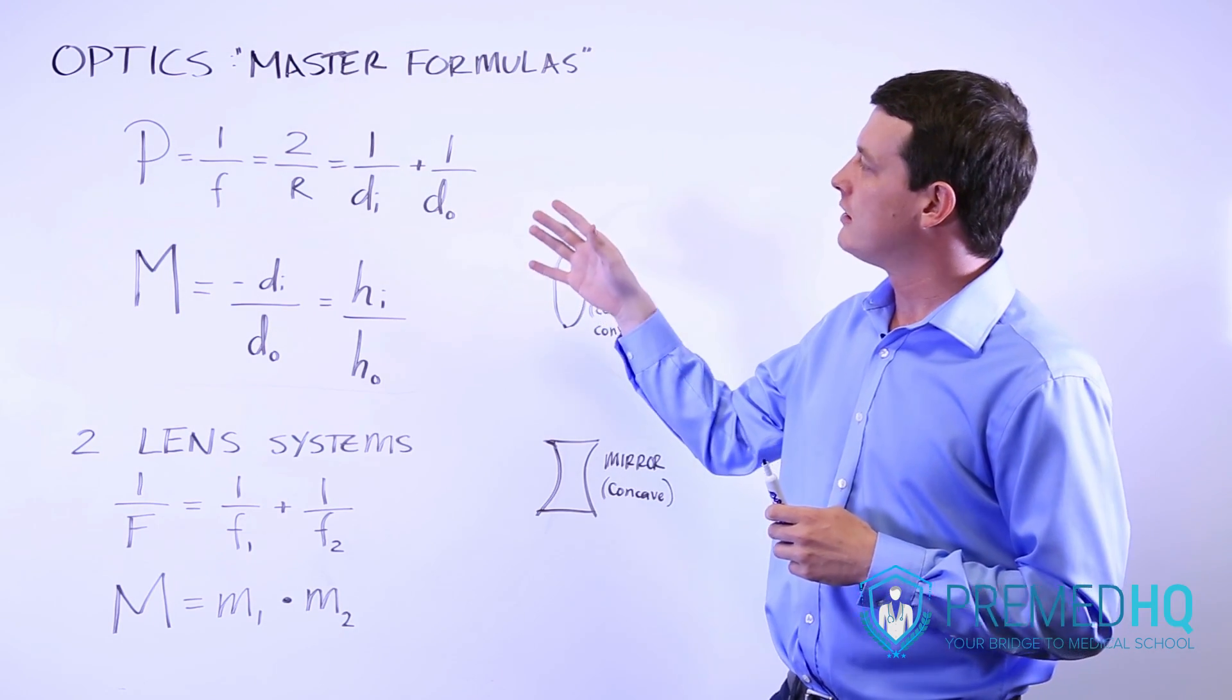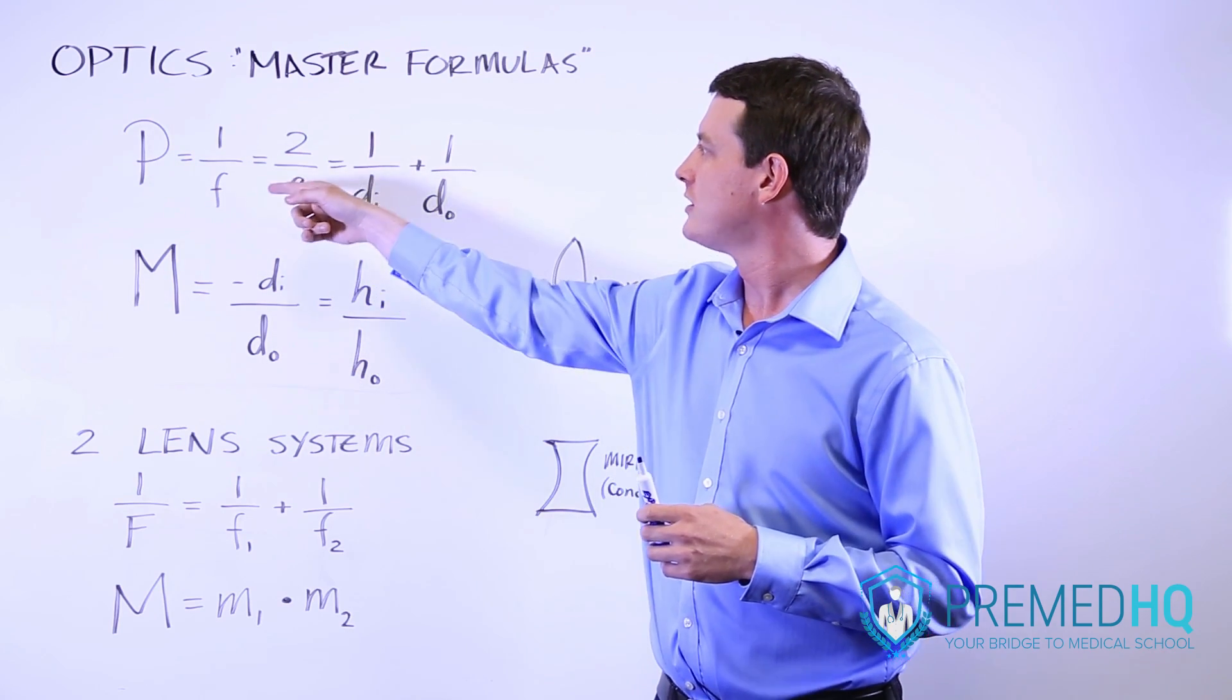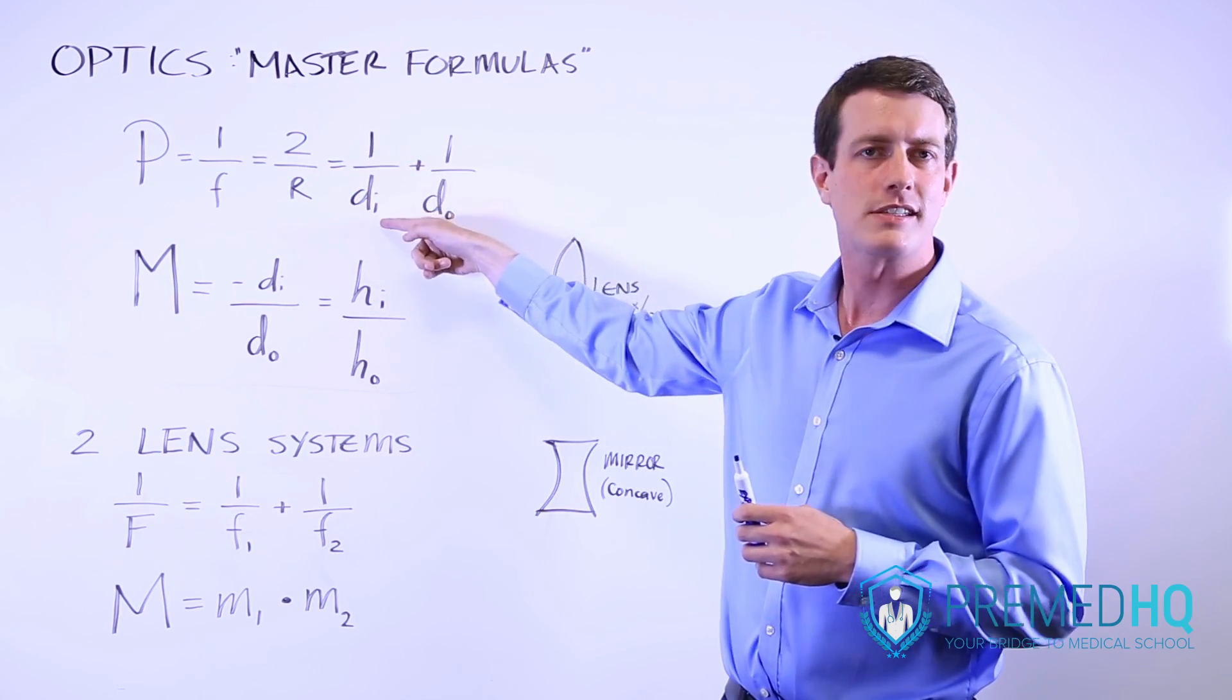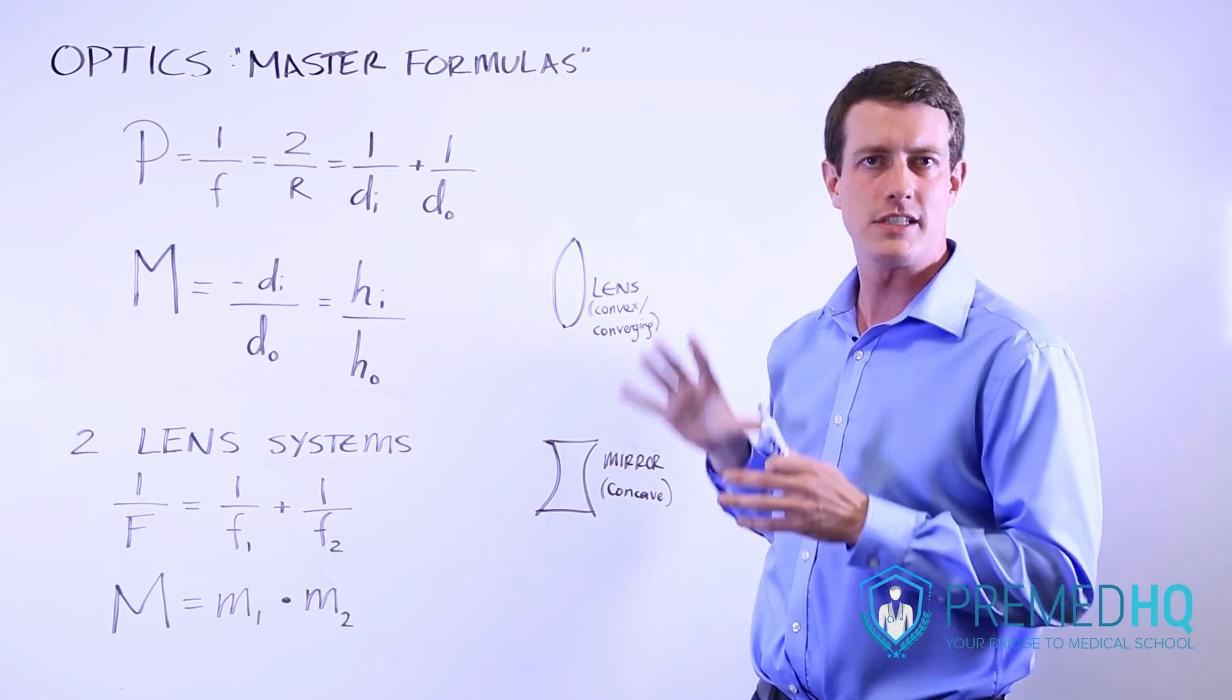You may have learned about the lens makers equation: 1 over the focal distance equals 1 over the distance of the image plus 1 over the distance of the object.